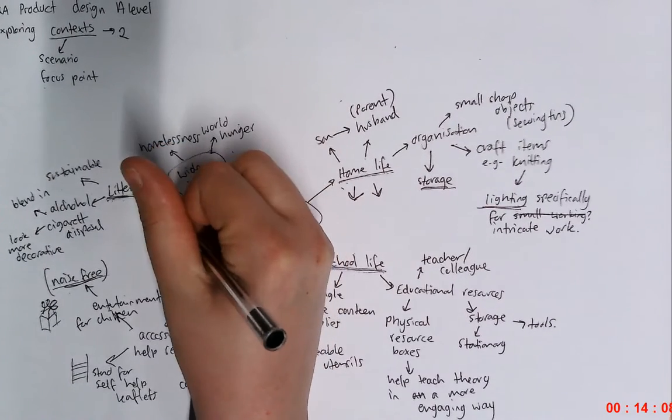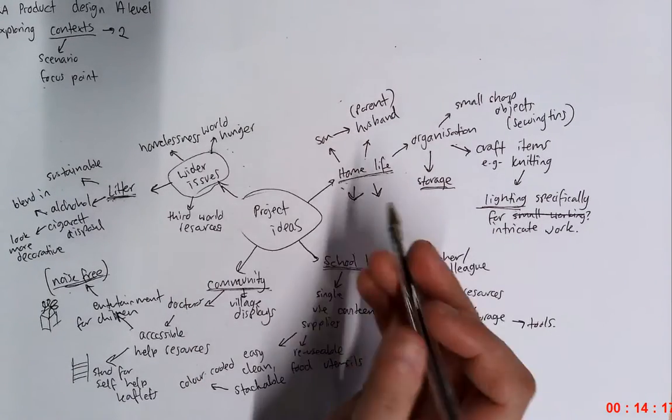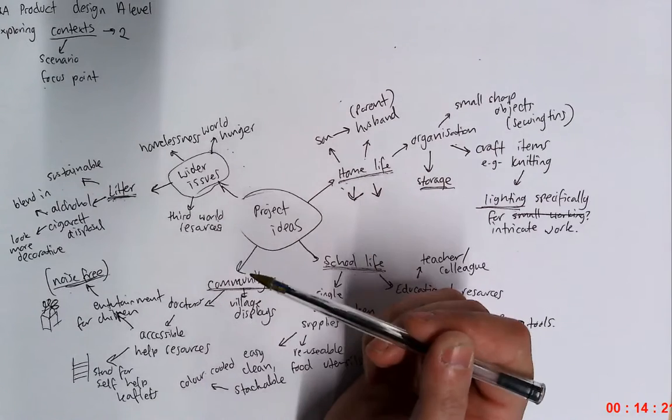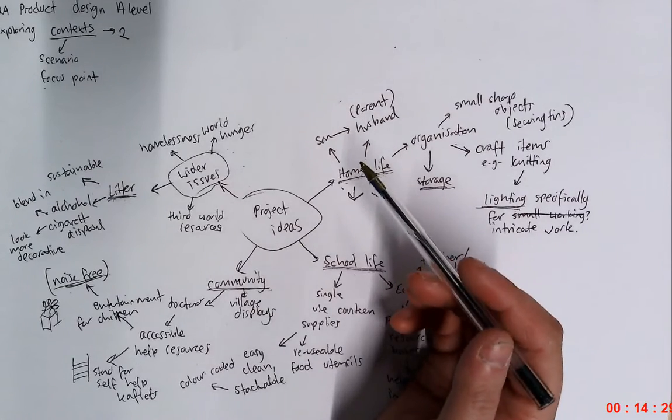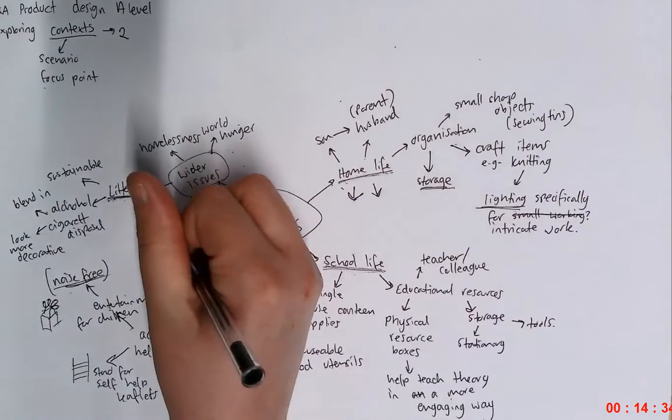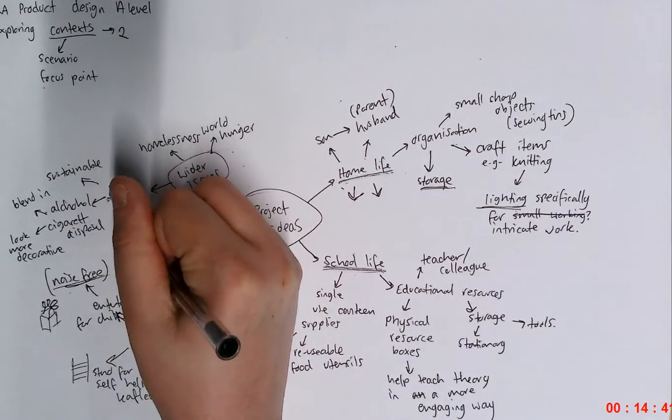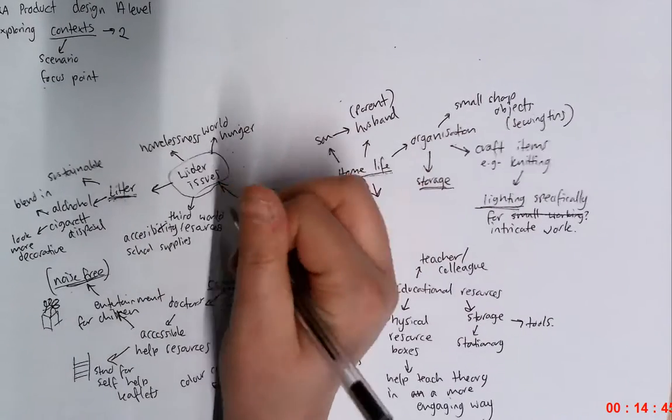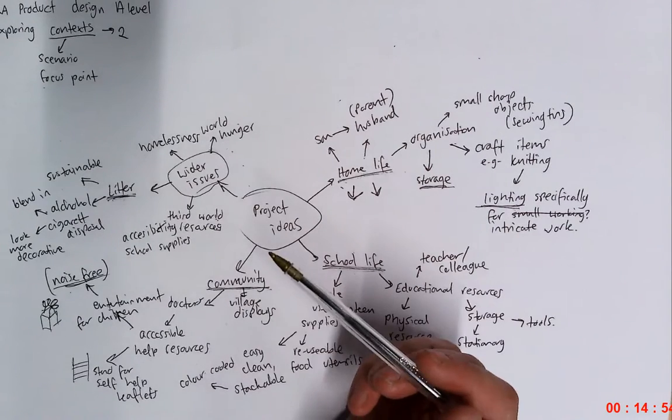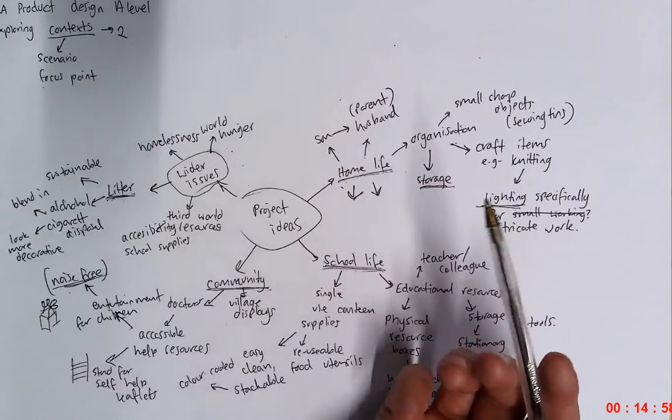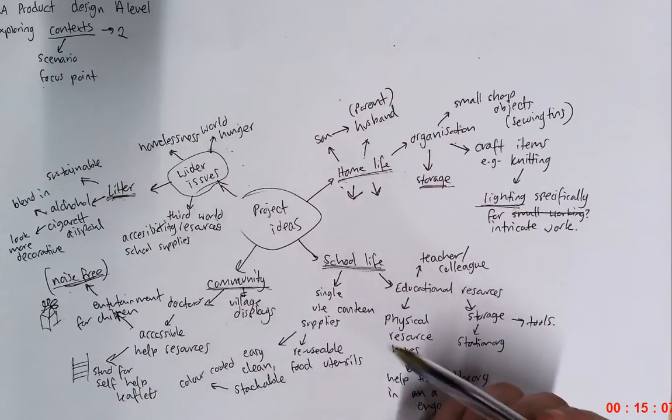That's one possibility, litter. Another one, third world resources. This is a really interesting one. So think about third world countries. We can't supply them with water with our project. I mean, you might be able to come up with an amazing way to access water better. But I'm thinking of things like accessibility, maybe school supplies. Maybe you want to create something, a resource box that's easily transportable so it can go from school to school, so it can help young people to actually access the equipment they need to learn. Which could be something as simple as books, stationary. Or maybe even laptops. Maybe it can have a charger in it so it can actually transport electrical equipment as well.